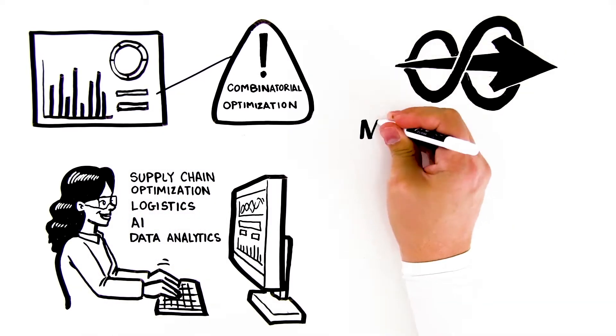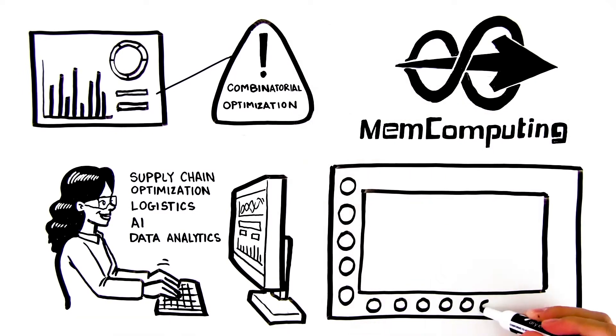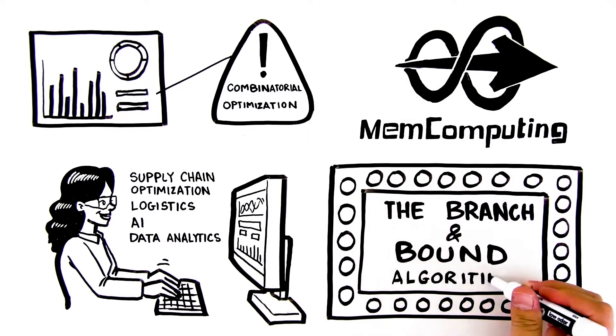This video shows the difference between MEM computing's approach and one of today's most popular techniques for solving combinatorial optimization problems, the branch-and-bound algorithm.